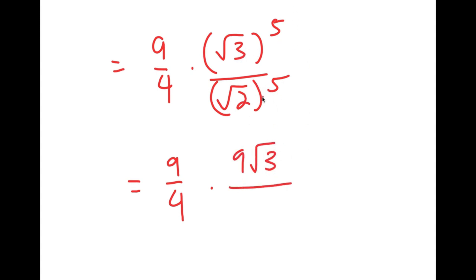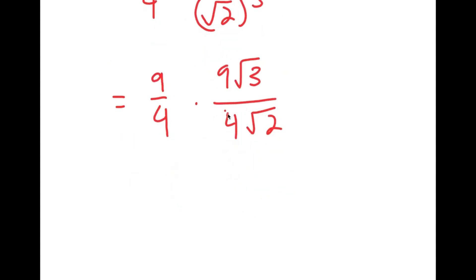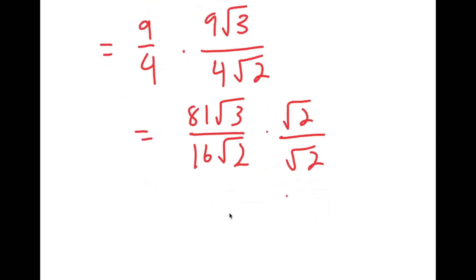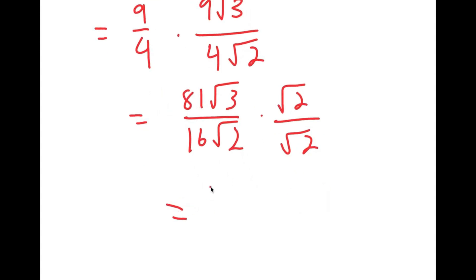And the square root of 2 to the power of 5 is equal to 4 root 2. So I have 9 over 4 times 9 root 3 over 4 root 2, which is equal to 81 root 3 over 16 root 2. We don't want any radicals in our denominator, so I'm going to multiply this by the square root of 2 over the square root of 2. So I get 81 root 6 over 16 times 2, which is 32. So this is my answer.